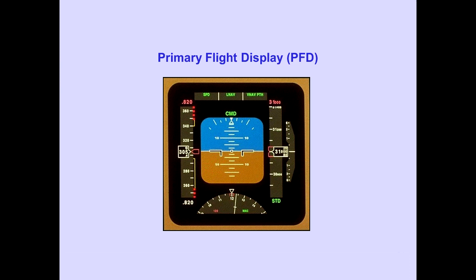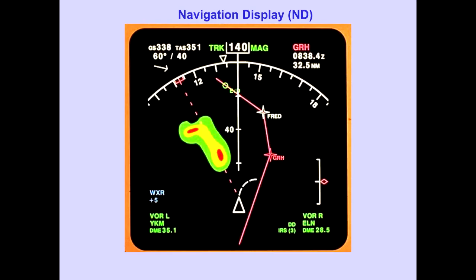The flight information is shown on the primary flight display, commonly referred to as the PFD. The navigation display, referred to as the ND, displays navigation information.